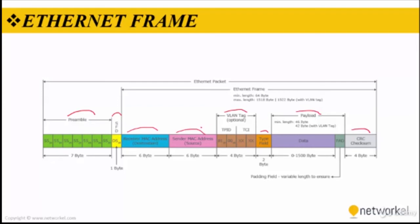For example, let's look at the preamble first. The preamble communicates to receiving devices that a frame is coming and provides synchronization. The second field is SFD, which is the start of frame delimiter, responsible for specifying the beginning of the destination MAC address in the next byte. The other fields are receiver and sender MAC, an optional VLAN tag, a type field, payload, pad, and CRC checksum.